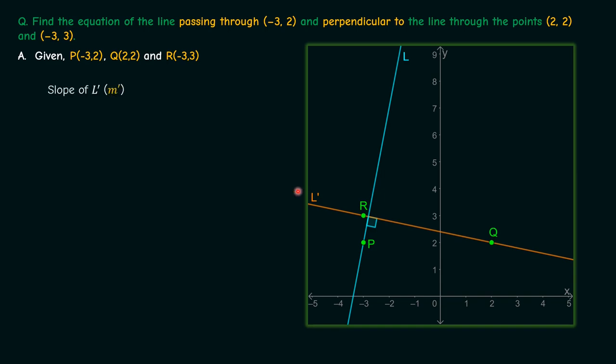Let's call this m' and this will be equal to the change in the y, that is 3 minus 2, by change in x, that is -3 minus 2, which is nothing but -1/5.